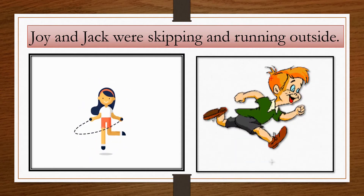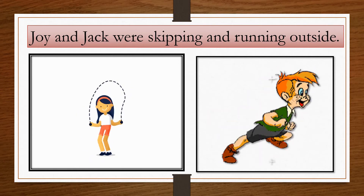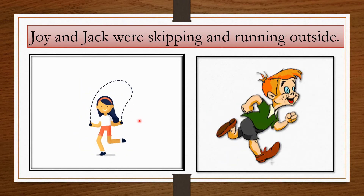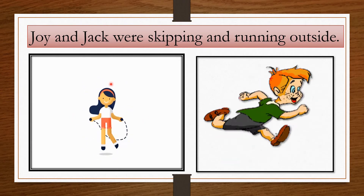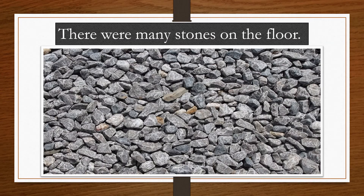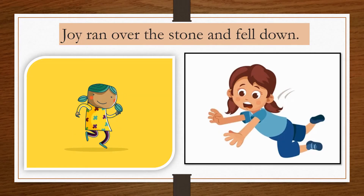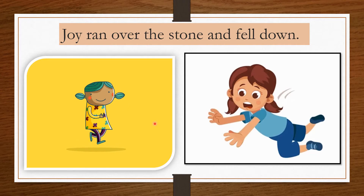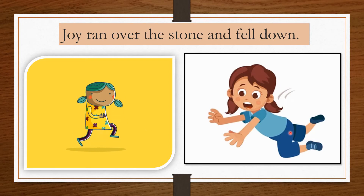Joy and Jack were skipping and running outside. Joy is a girl — she is skipping, and Jack was running outside. There were many stones on the floor where they were skipping and running. Joy ran over a stone and fell down.